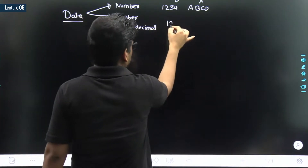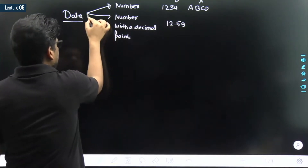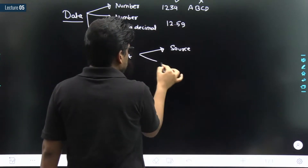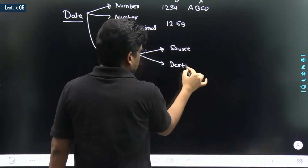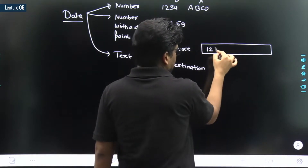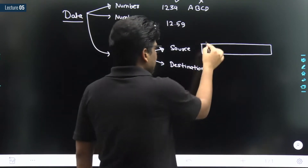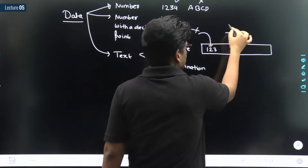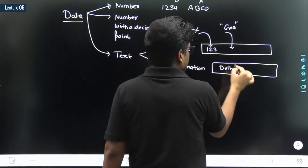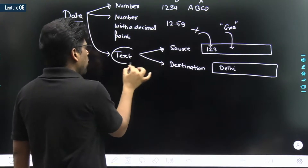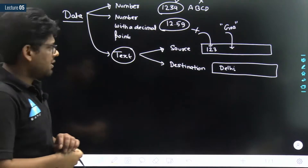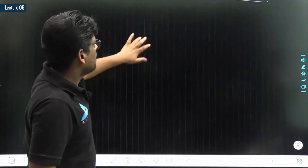A number could be like 12.59 — a number with a decimal point. It could be text. For example, consider Google Maps — we have a source and a destination. Within the source text box I cannot write '1, 2, 3'; even if I write it, it is of no use. That means we cannot provide it as a number. But it is okay to write 'Goa' — I want a route from Goa to Delhi, so the input is of the form text. So we have: text, a number with a decimal point, and a plain number.